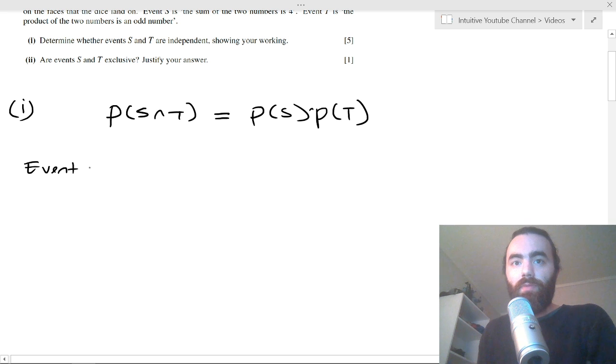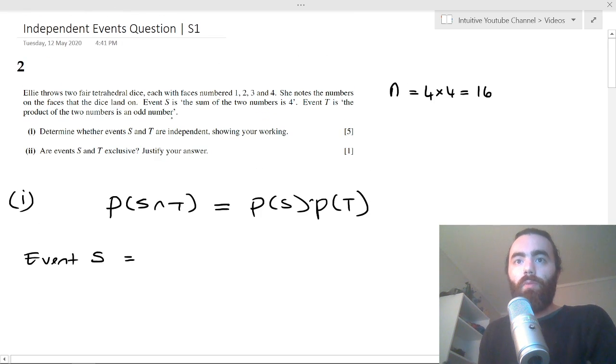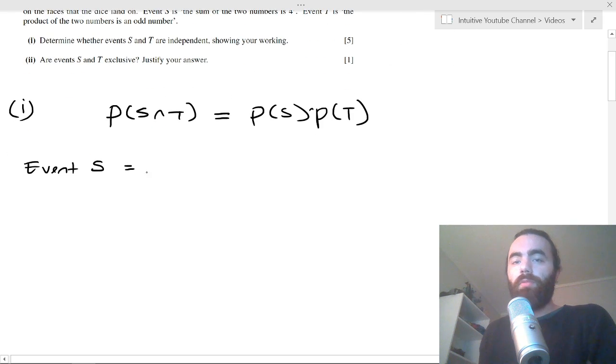So let's write down event S. Well, this is if the sum of the two numbers is four.